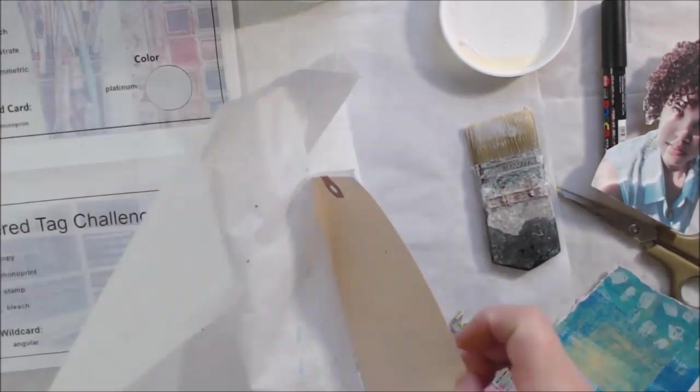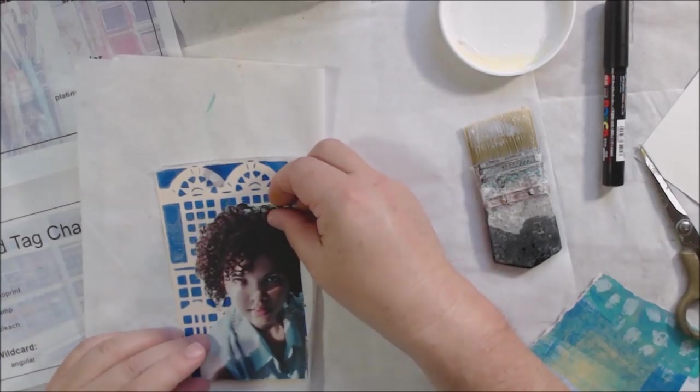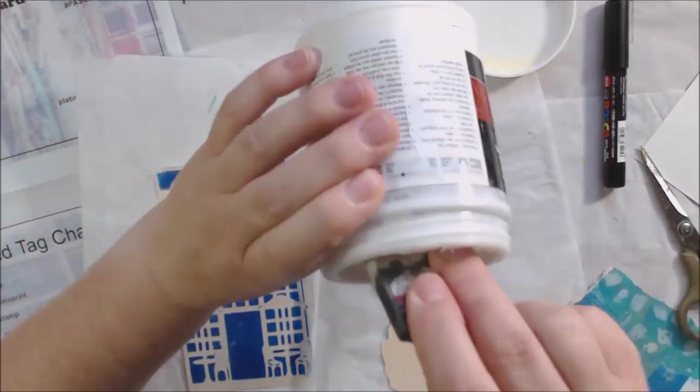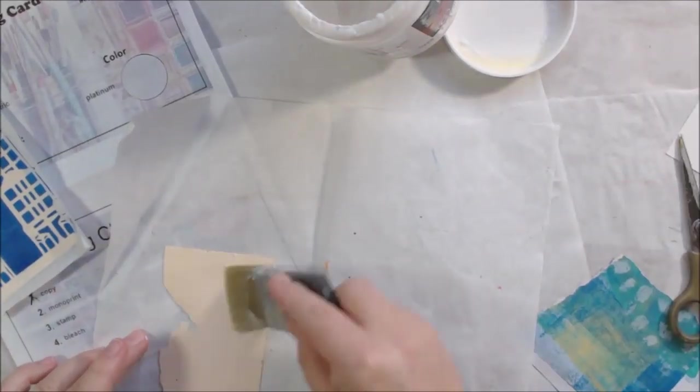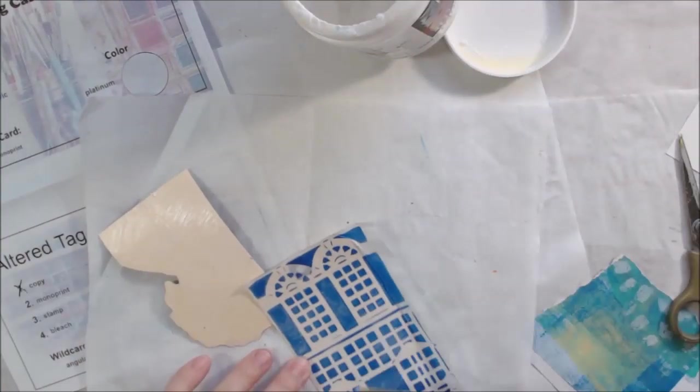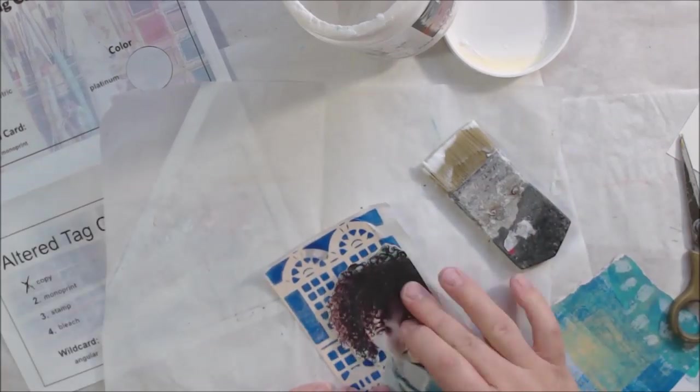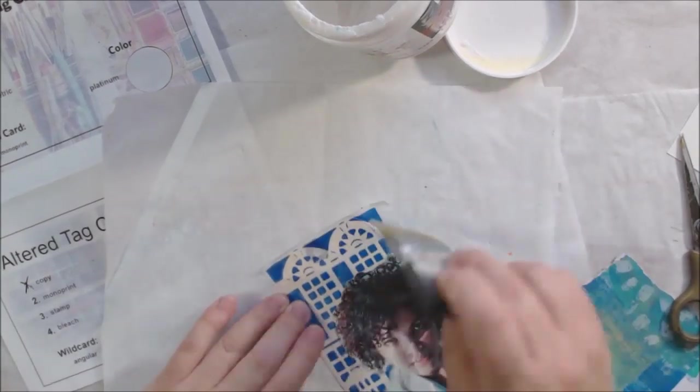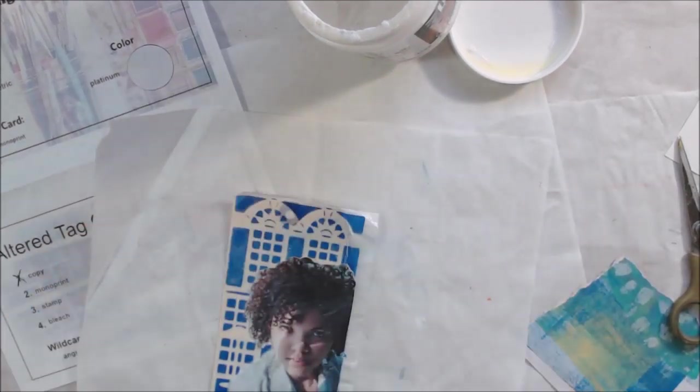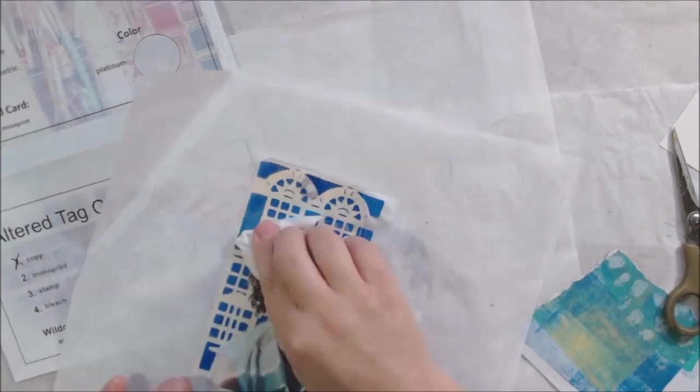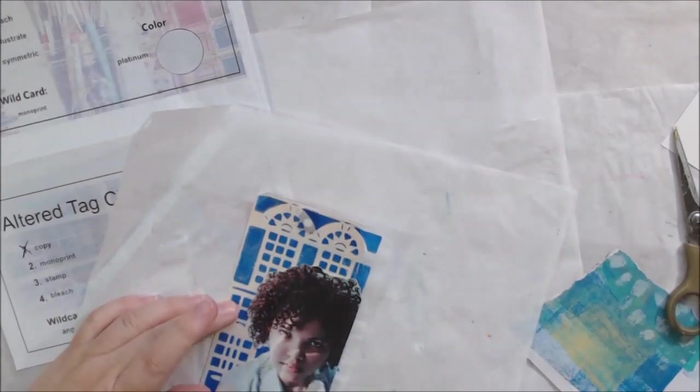Of course, all the products I use are always linked in the description box below and also there's a link to my Amazon store. You can go over there and use that link to buy things off of Amazon and it helps me by giving me a few cents when you do that, and then I can use that money to buy more art supplies and stuff like that to show on my channel.